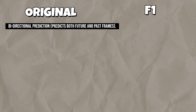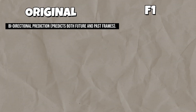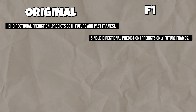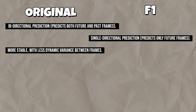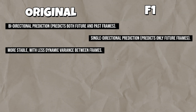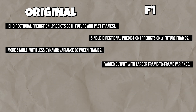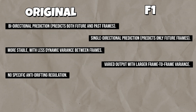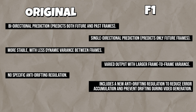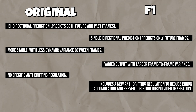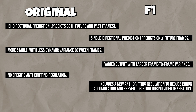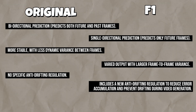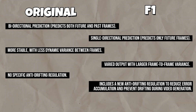In this comparison, we have two versions of FramePack. The original model uses bi-directional prediction, generating both future and past frames for more stable, consistent results. FramePack F1, on the other hand, is single-directional, focusing only on predicting future frames and creating more dynamic and varied outputs. With F1 you get larger variances, perfect for applications like camera traveling, while its new anti-drifting regulation prevents errors from building up over time.